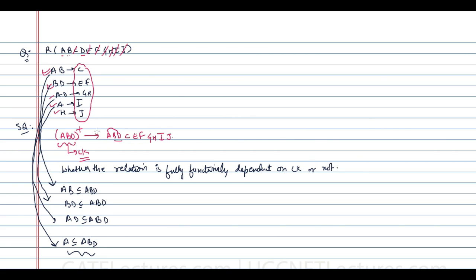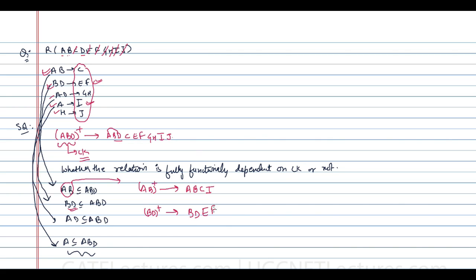To determine how many relations to break it into, let us find the closures of each proper subset. AB closure gives us A, B, C, and I — from the first production AB determines C, and from A we determine I. BD closure gives us B, D, E, and F — from the second production BD determines EF, and nothing else.